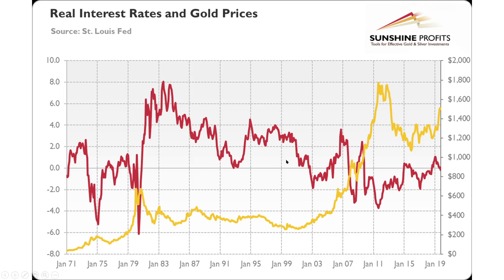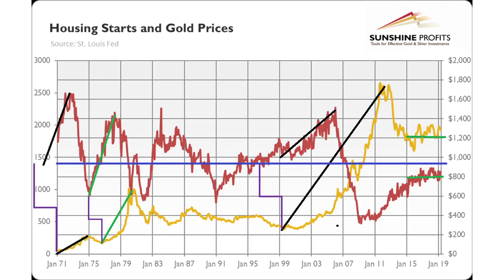There's an easier correlation here to see. Going to the next slide: housing starts and gold prices. The blue line is the average demand per year, which is just under one and a half million homes per year — the yearly demand for new housing, what we should be building per year. This cycles back and forth above and below, and the area under and over the curve has to equal each other out over time.